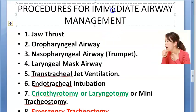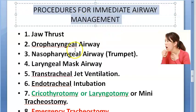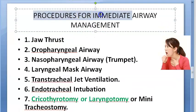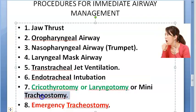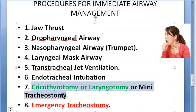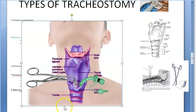When is mini-tracheostomy done? Whenever there is a need for immediate airway management, cricothyroidotomy or laryngotomy comes before emergency tracheostomy — it's the procedure for immediate airway management while you buy time to take the patient to the operation theater. Commercial kits are available for this. It can also be done electively, for example to clear secretions following thoracic surgery.